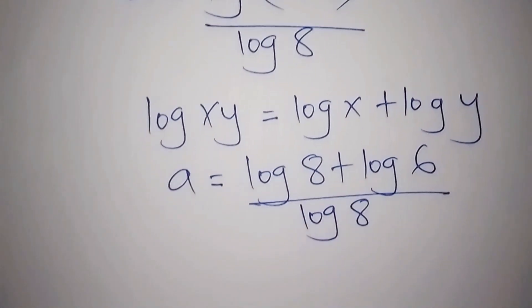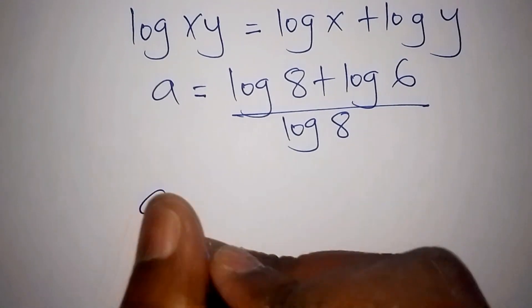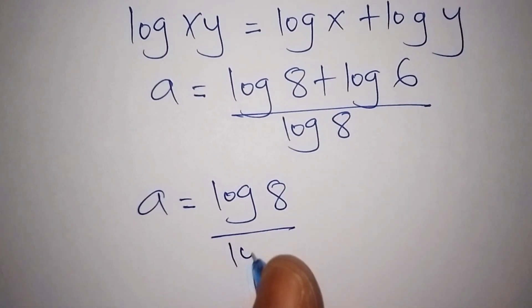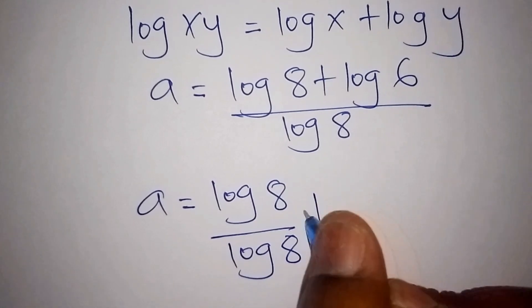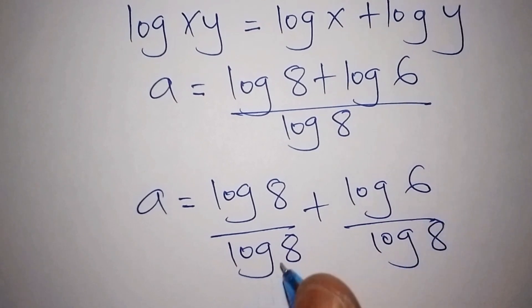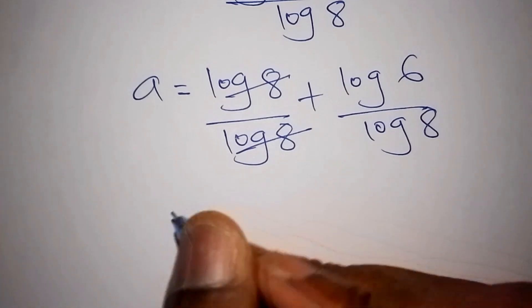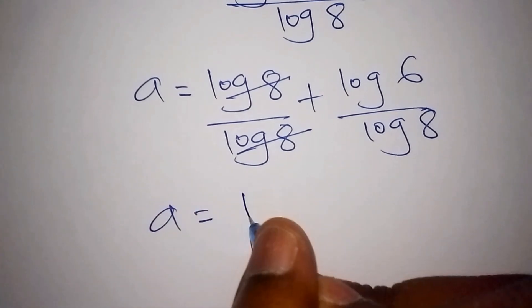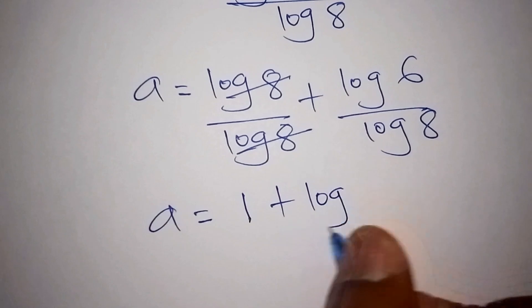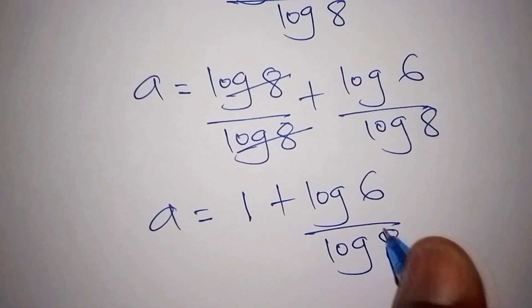We now divide through by log 8. So A equals log 8 over log 8, plus log 6 over log 8. The log 8 over log 8 cancels to give 1, so A equals 1 plus log 6 over log 8.